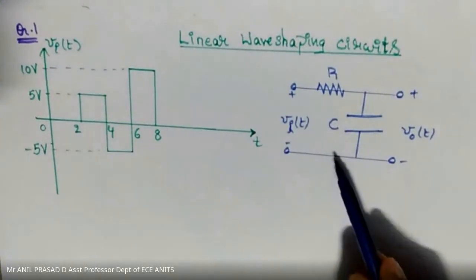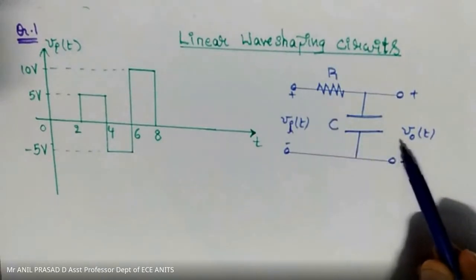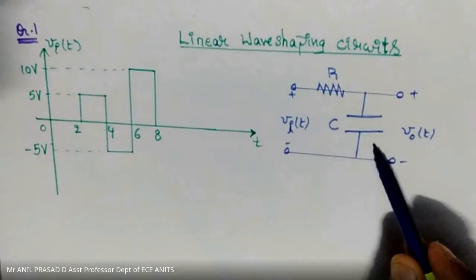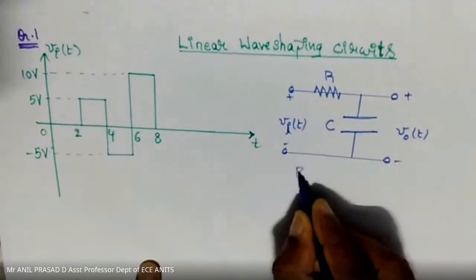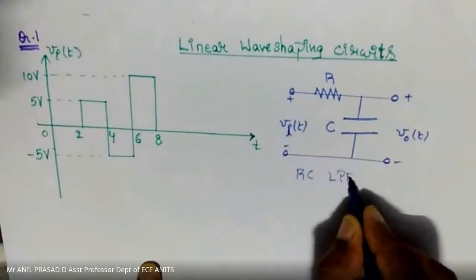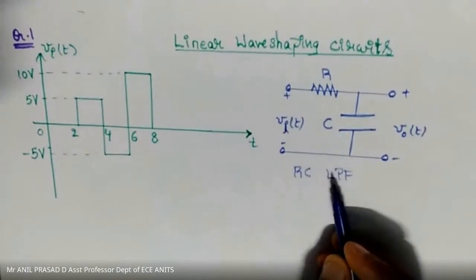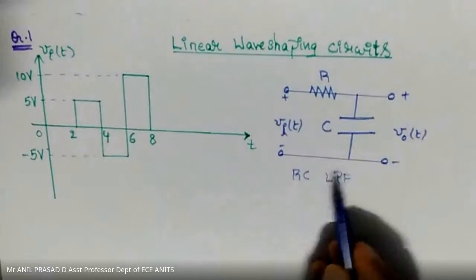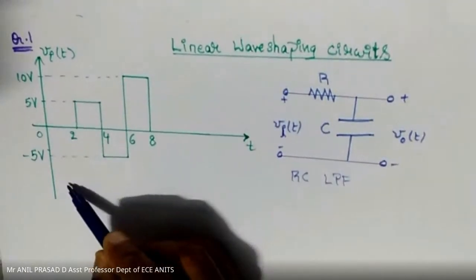For the given circuit, what type of circuit is it? It is an R and C circuit. When you take the voltage across the capacitor, we know that it is called an RC low pass filter circuit. The input applied to this circuit is as shown here.